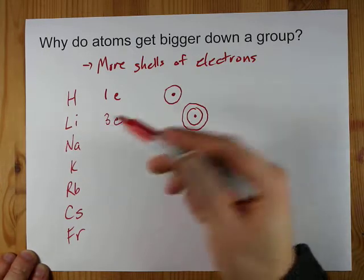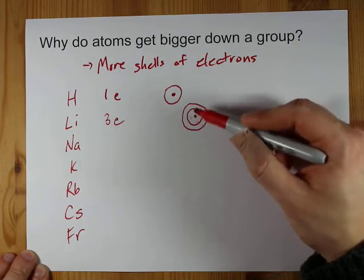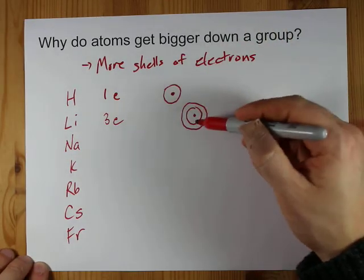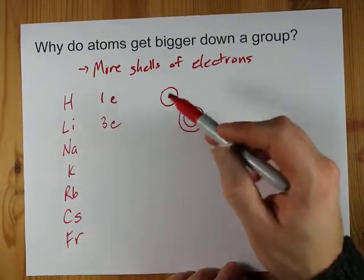Now, technically, because lithium has three protons, each of these shells are held a little bit closer than they are in the atom above it. Put another way, the first shell of lithium is smaller than the first shell of hydrogen,